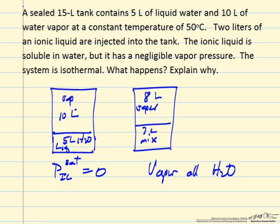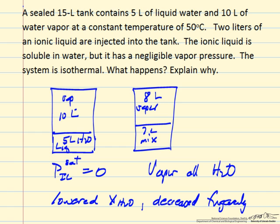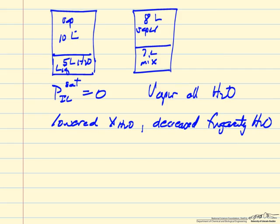Now as we add the ionic liquid to liquid water, we've lowered the mole fraction, so we've decreased, we've lowered the mole fraction of the water. We've diluted it with ionic liquid, which means we've decreased the fugacity of the water. So fugacity of the water is lower, and this means the pressure above the water is lower.